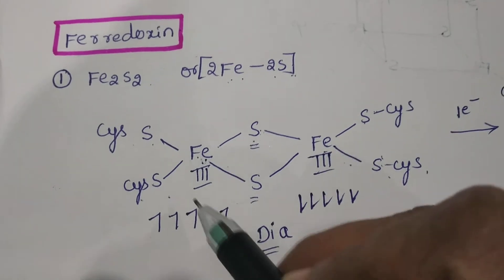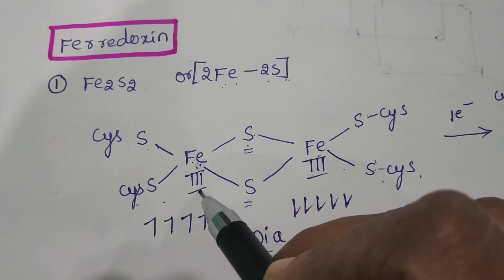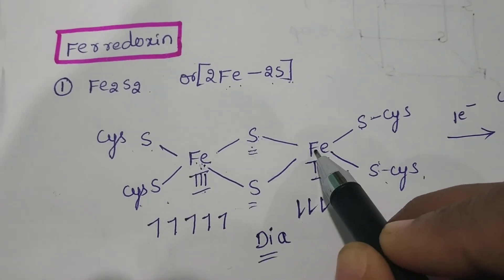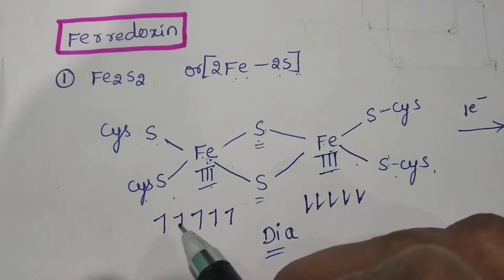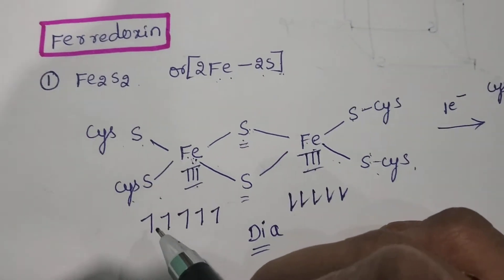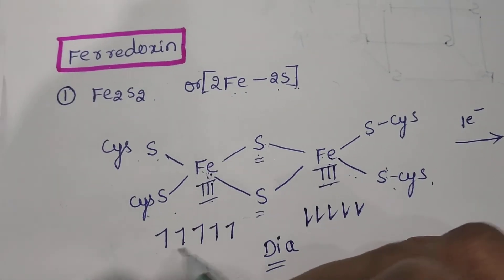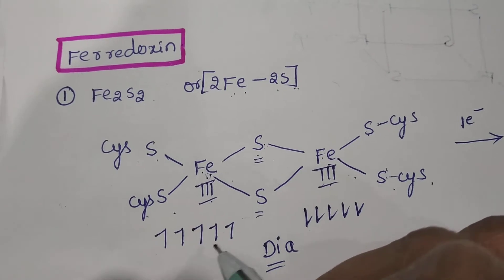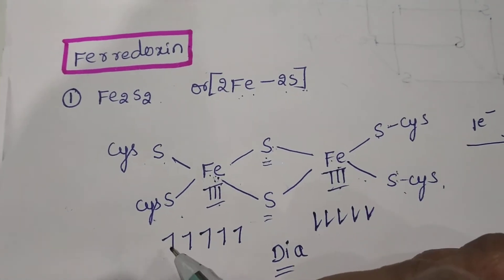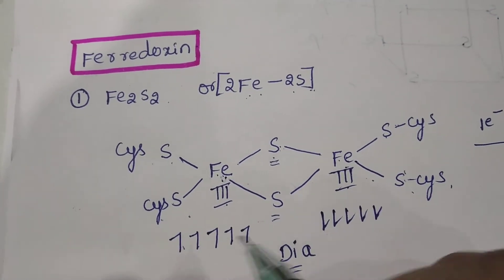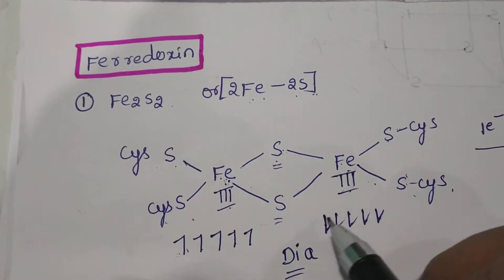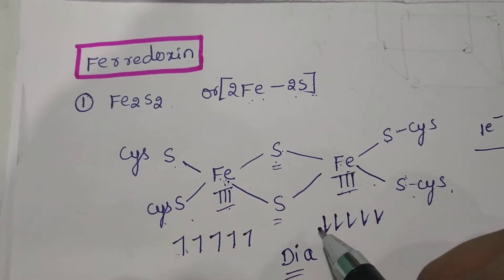Here Fe will be in the plus-three oxidation state, and here Fe is also in the plus-three oxidation state. In the plus-three oxidation state there are five lone electrons here, and here also five. So these electrons and these electrons — their spins will be cancelled.